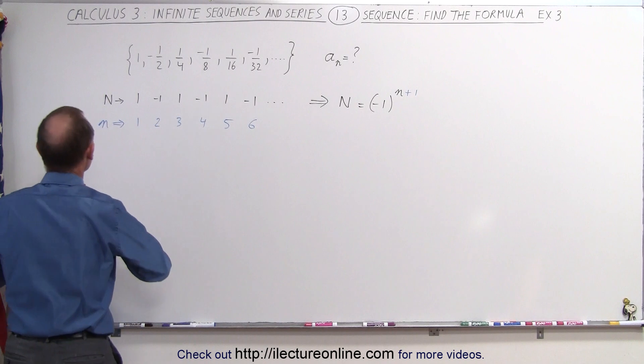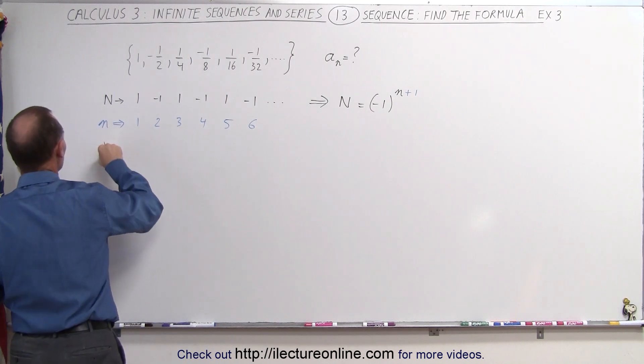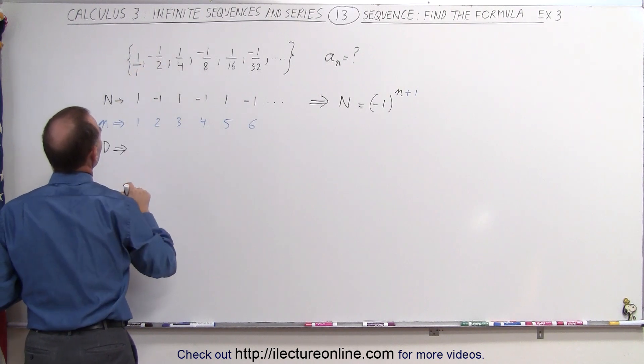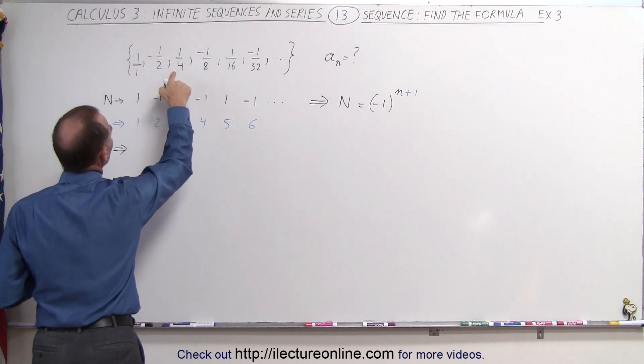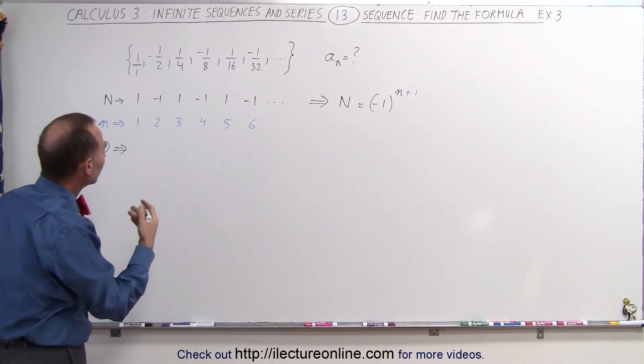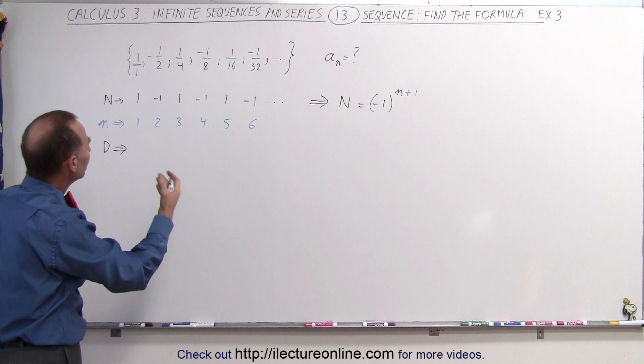Now, the denominator. So notice the denominator. Here, we can write this as one over one. And here it's two, and there it's four, and there it's eight, and there it's 16, which looks like it has something to do with two to the exponent.